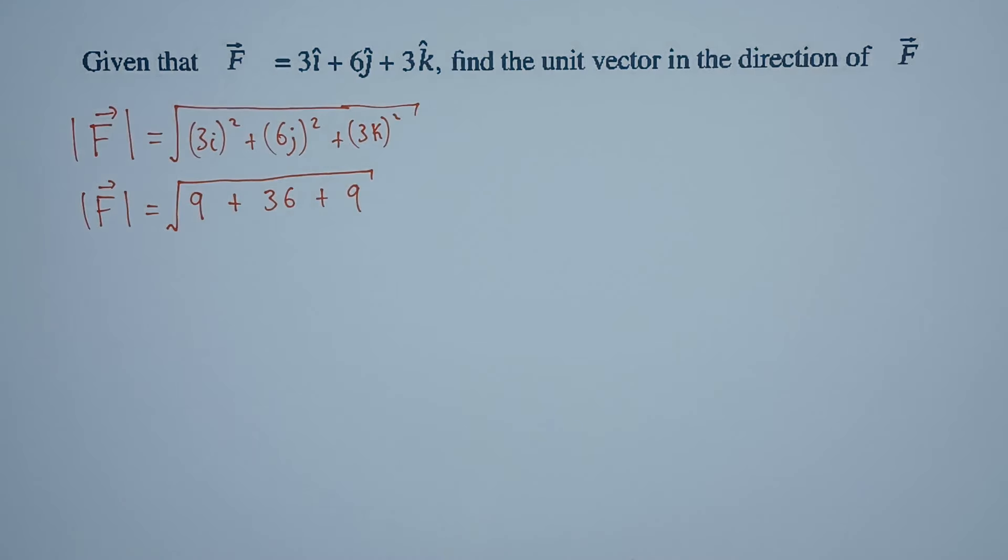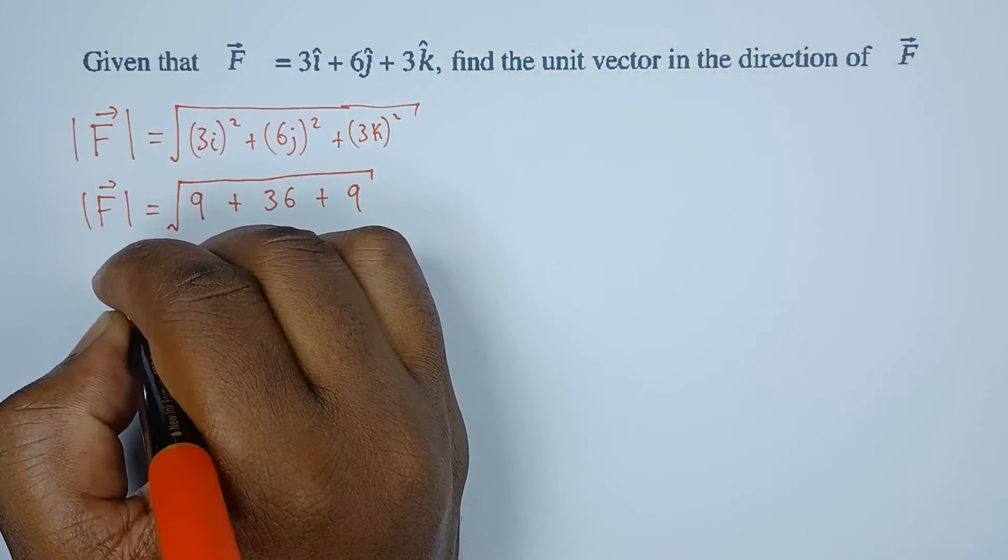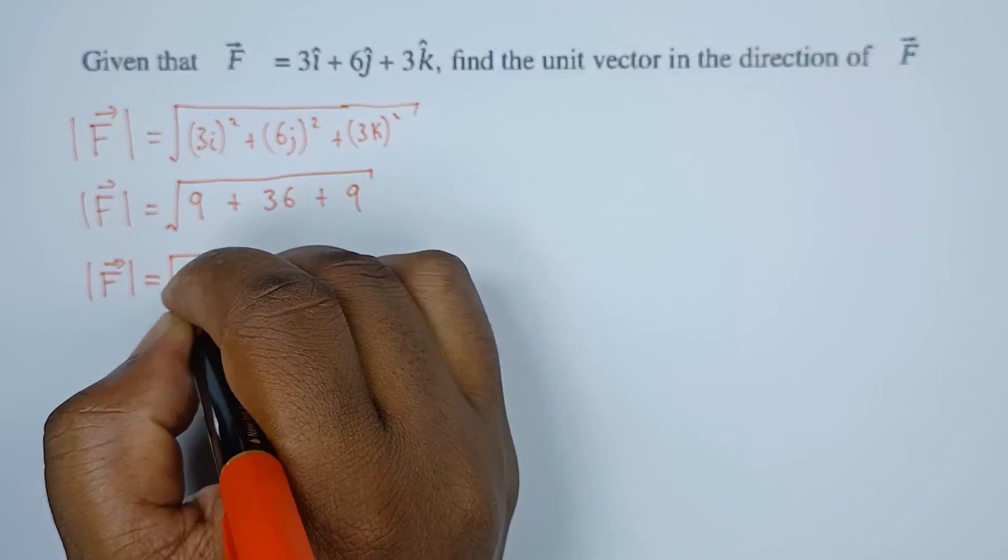From there now, we're just supposed to add up everything. So if we add 9 and 9, we get 18. That 18, we add it to 36, we get 54. Meaning that the magnitude of this particular vector is the root of 54.